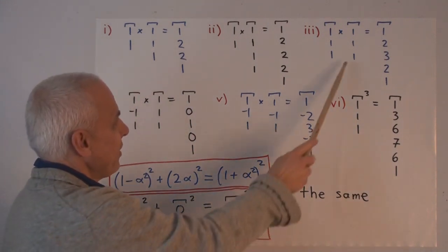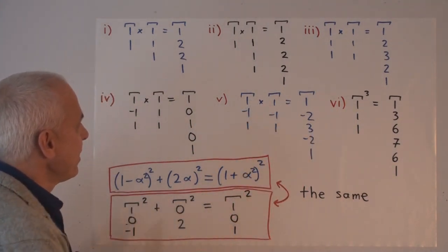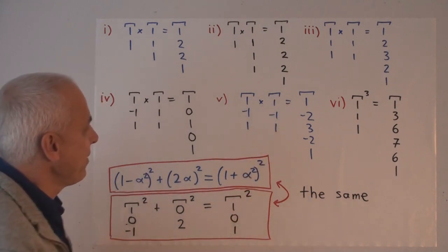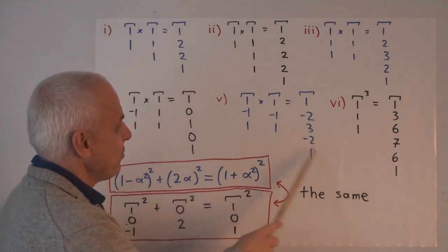Here's a slight variant on this one. 1 minus 1, 1 times 1 minus 1, 1 gives us 1 minus 2, 3 minus 2, 1.